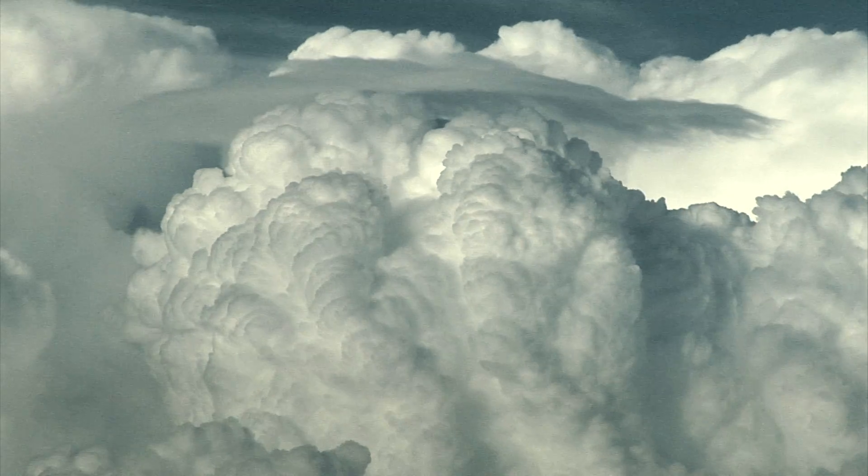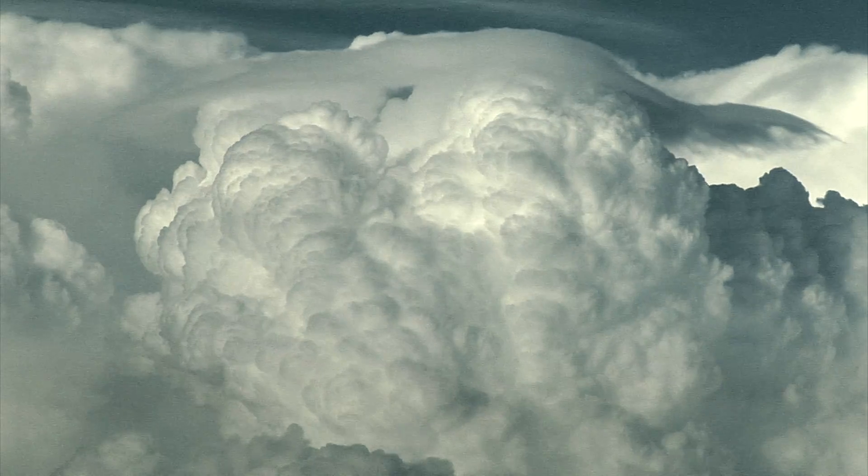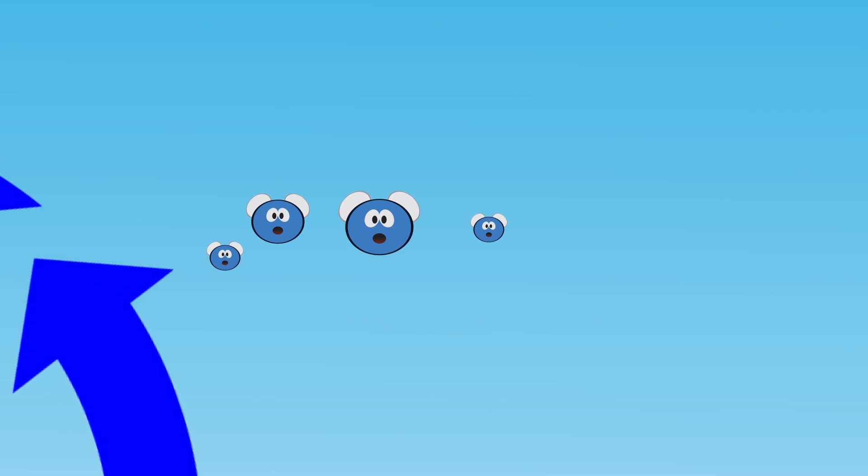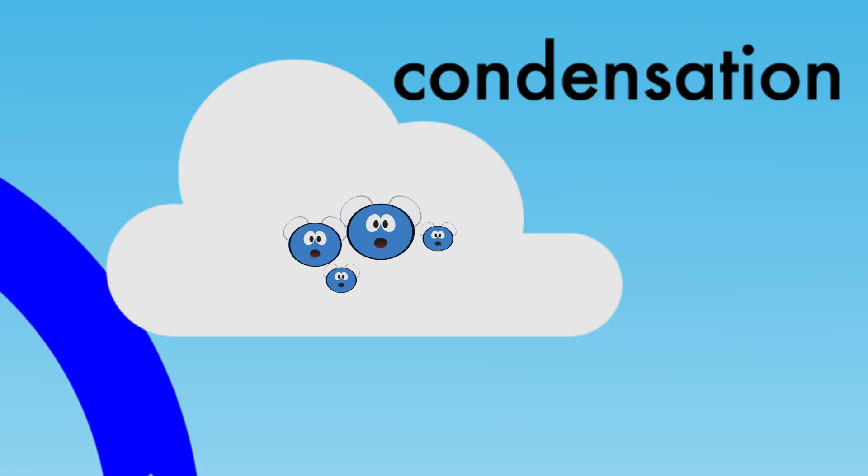The second step in the water cycle is condensation. The water vapor goes up, up, up into the sky, and because it's cold way up in the sky, it starts to condense. This means the little particles of water that make up water vapor start to come together and form clouds.